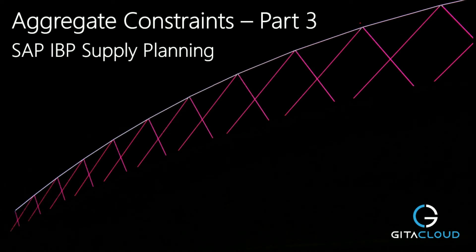Hello and welcome to this SAP IBP Explainer video series focused on aggregate constraints. This series is aimed at supply planners and any other IBP practitioners. In this part 3, we will show you how plant managers can use aggregate constraints to allocate production capacity across product families.